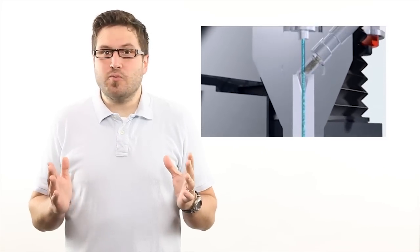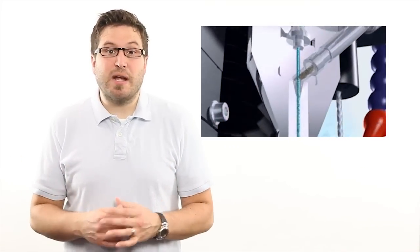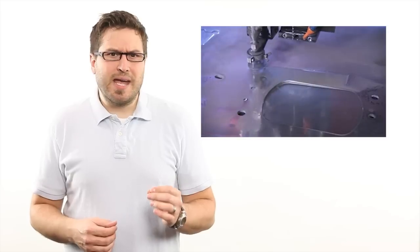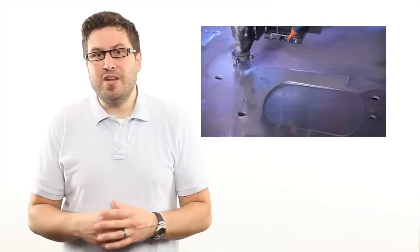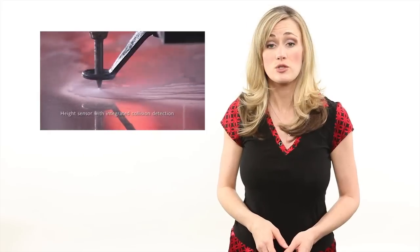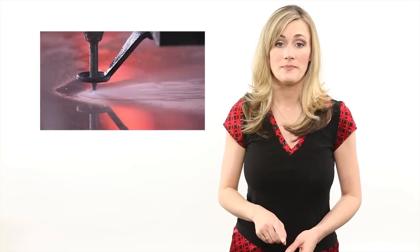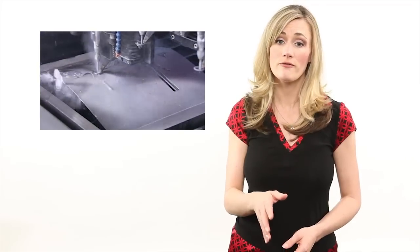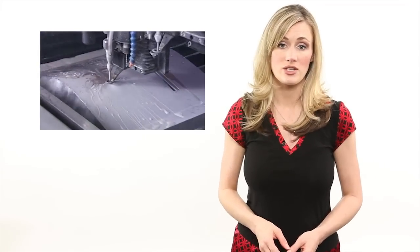Water jet cutting doesn't run into problems commonly encountered by traditional cutting machines, such as thermal erosion of materials. And because the water mixture is kept cool, there is no risk of the machine overheating and ruining the products. The head of the cutting machine, the part that shoots water and sand, is equipped with a sensor to measure the distance between the head and the material. This distance is kept consistent throughout the cutting process to avoid bumps and increase precision.